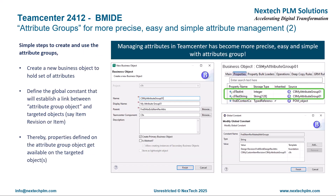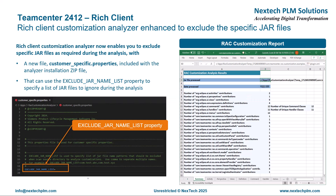To define and use attribute groups, you can follow simple steps: create a new business object to hold the group of attributes, then define the global constant to establish a link between the attribute group object and target object like item or item revision. Once the link is established, you can see those attributes available on the target objects.